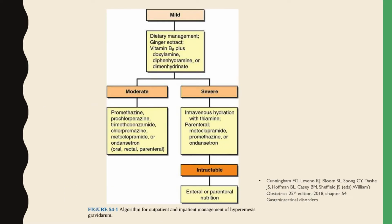This algorithm shows the outpatient and inpatient management of hyperemesis gravidarum. For mild cases, we can do dietary management and give ginger extract, vitamin B6 plus doxylamine, diphenhydramine, or dimenhydrinate. For moderate cases, we can start promethazine, prochlorperazine, trimethobenzamide, chlorpromazine, metoclopramide, or ondansetron.